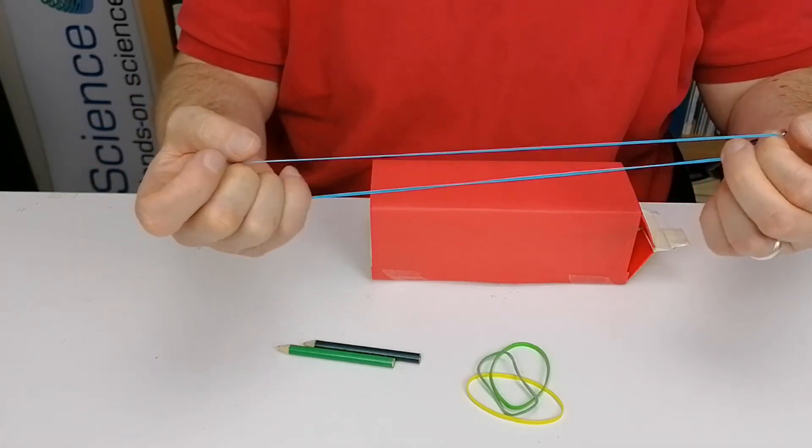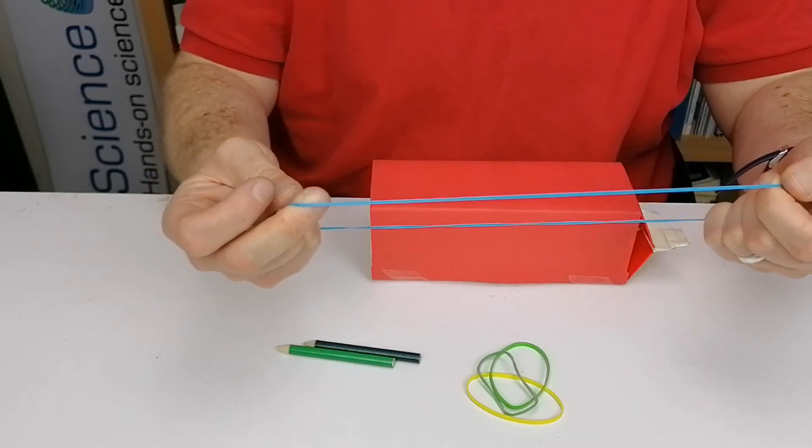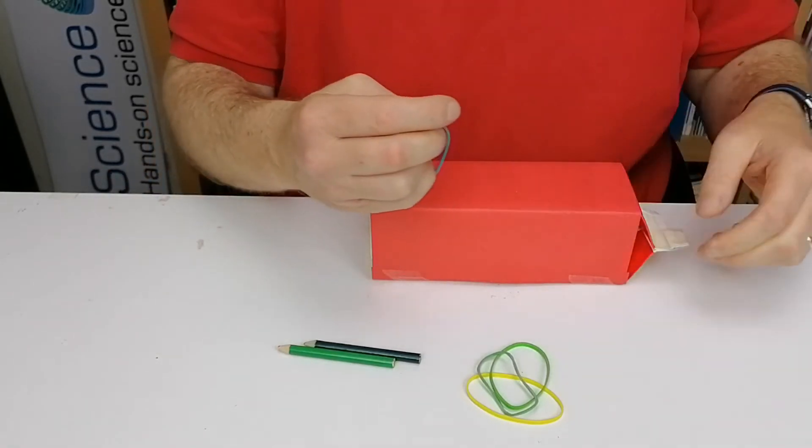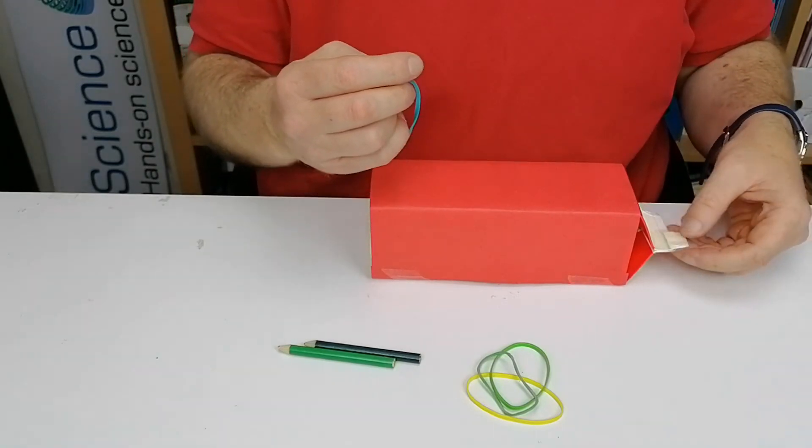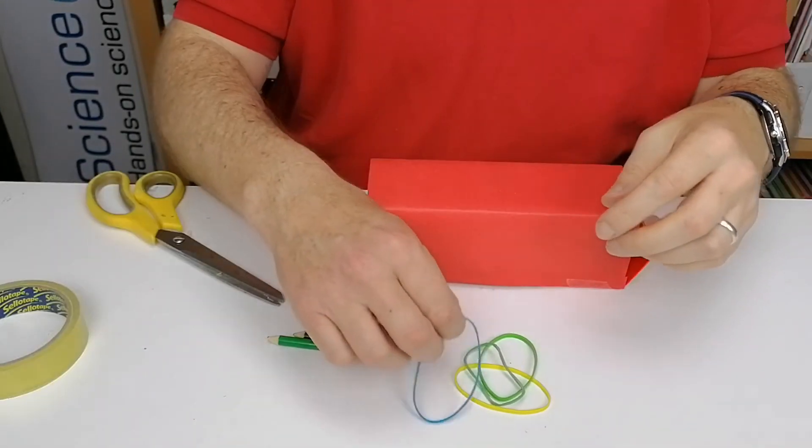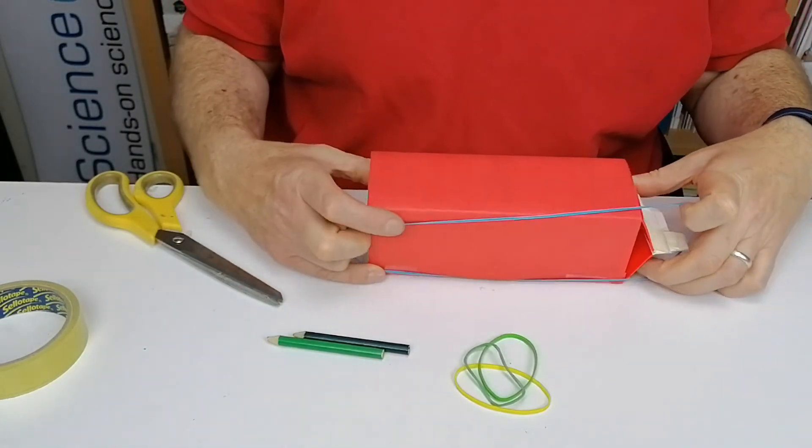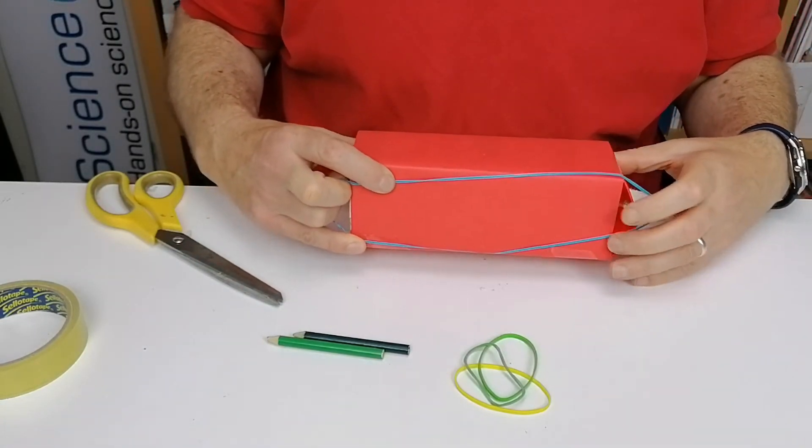So we're going to do the exact same thing here with the juice carton. As you put it around the carton, one string will be a little longer because it has to go around a further bit of cardboard up here at the top. We're going to take one of the elastic bands and put it over the longest section of the carton.